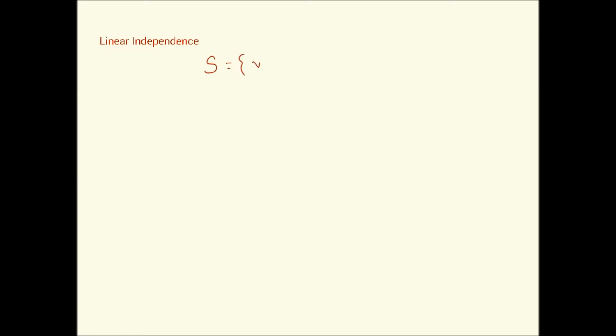The concept we want to look at in this video is linear independence. If a set of vectors v1, v2, ..., vr has the property that none of the vectors within the set can be expressed as a linear combination of the other vectors, we say that that set of vectors is linearly independent.